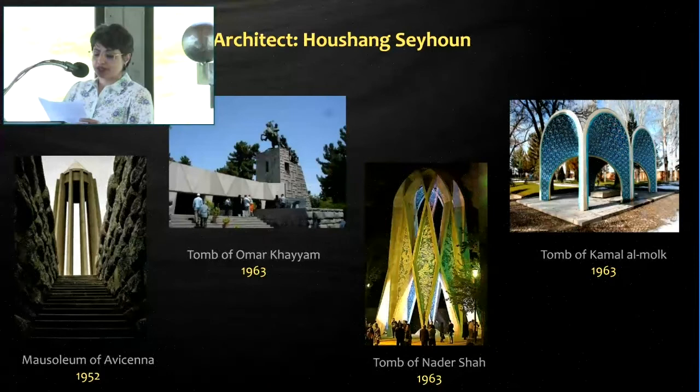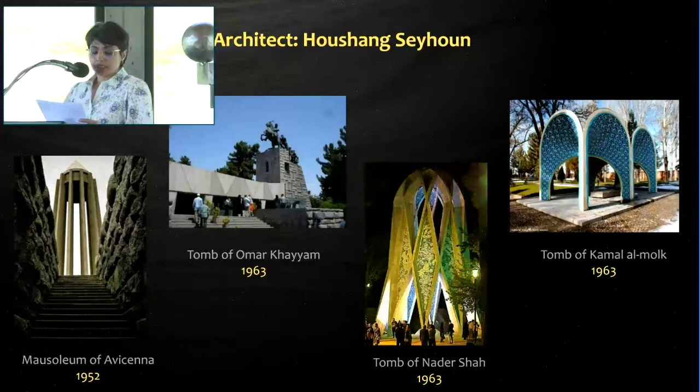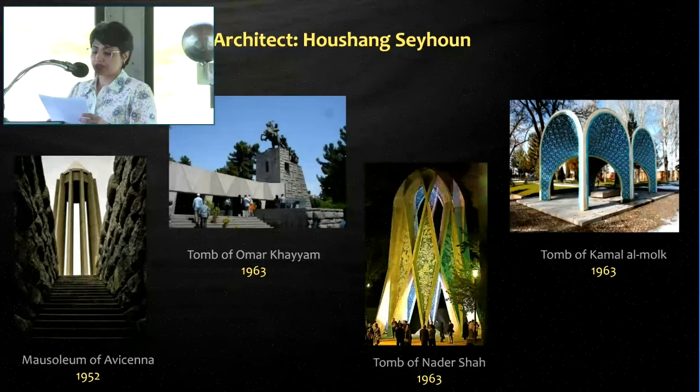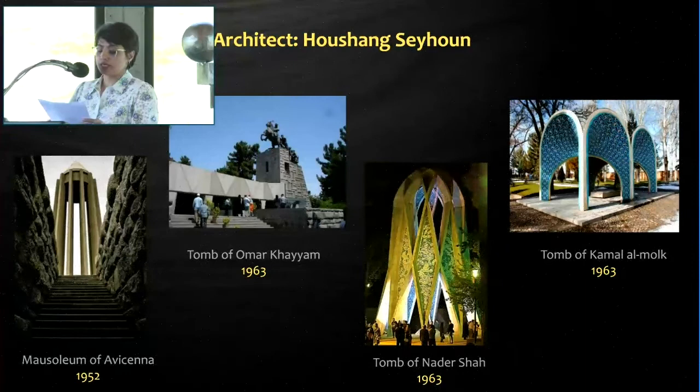He referred to past Iranian monuments in a minimalist and modern language in his designs for historical figure tombs, such as those of Avicenna, Khayyam, Nader Shah, Kamal al-Mulk, and Ferdowsi. These monumental tombs in contemporary Iran were mainly erected as memorials for non-religious scientific, cultural, and national celebrities.